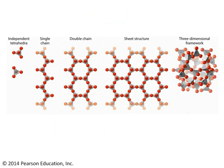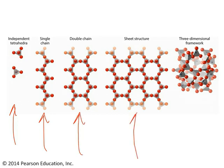Those tetrahedra can be linked to one another in various ways. They can be independent tetrahedra, linked together in single chains, linked together in double chains, linked together in big sheet-like structures, or arranged in more complex configurations.